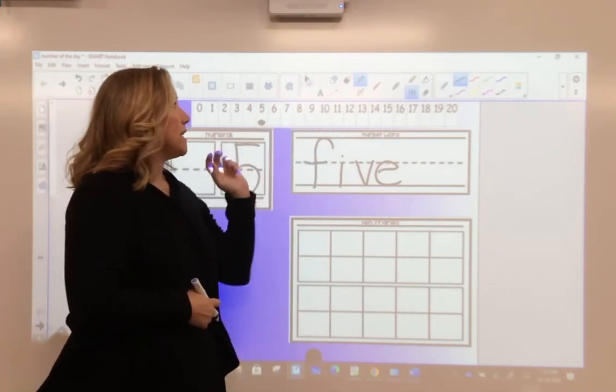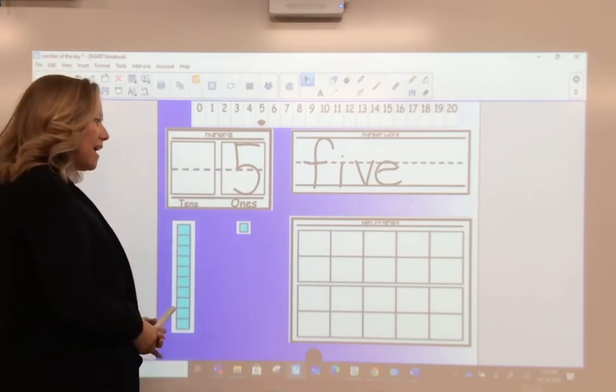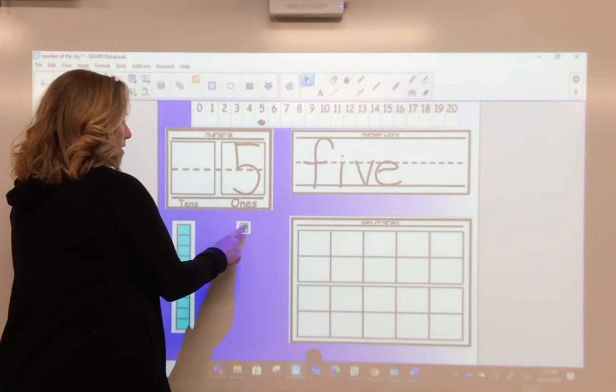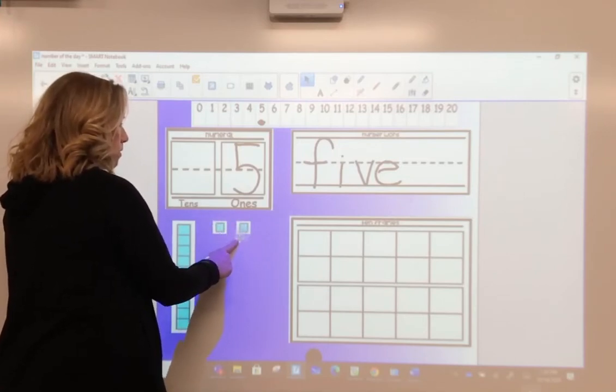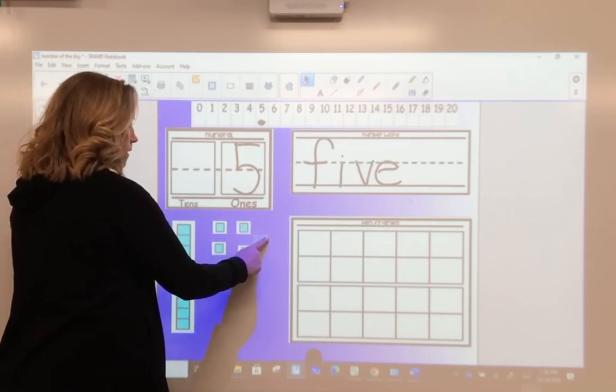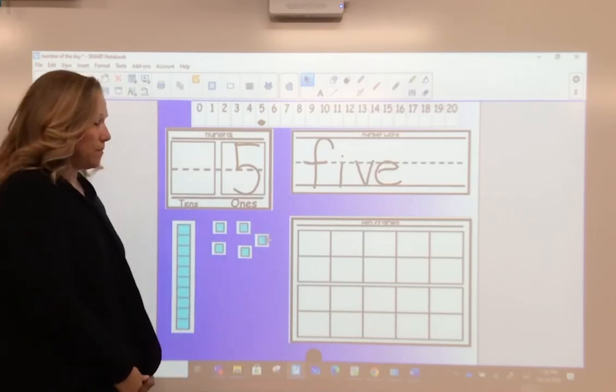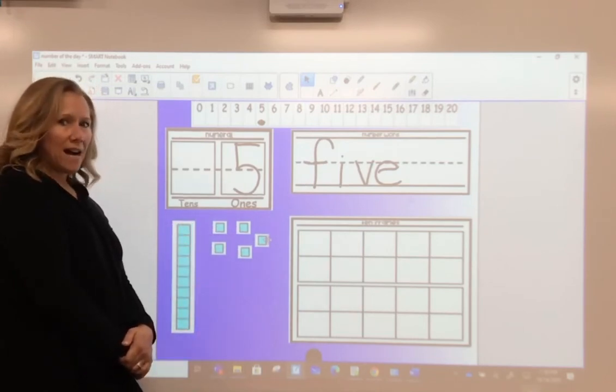Now we need to count out how many squares? That's right. Five. Count this as one. One, two, three, four, five. How many squares did we count? Five. Good job.